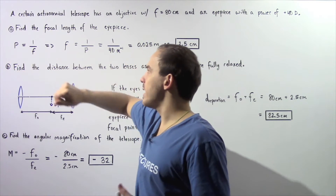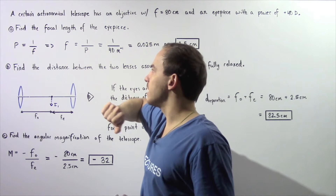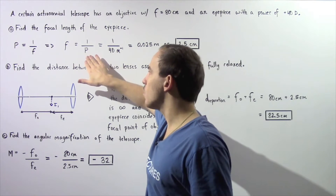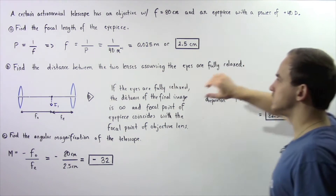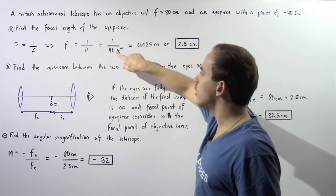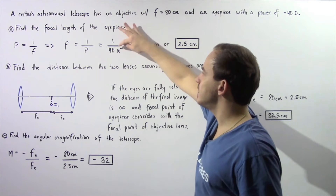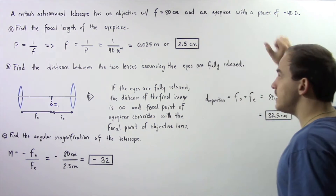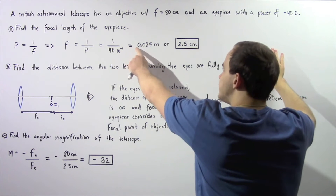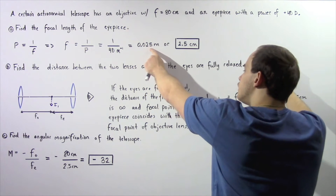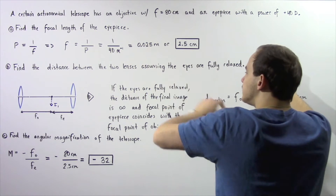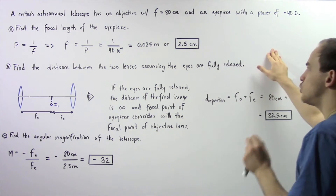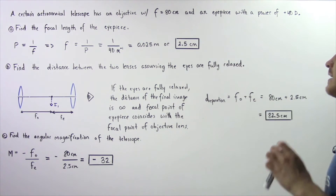We rearrange this equation and solve for the focal length. The focal length is equal to 1 divided by the power, and the power is equal to 40 with units of meters to the negative 1. So the focal length of our eyepiece lens is equal to 0.025 meters, or equivalently, multiplying by 100, that gives us 2.5 centimeters.